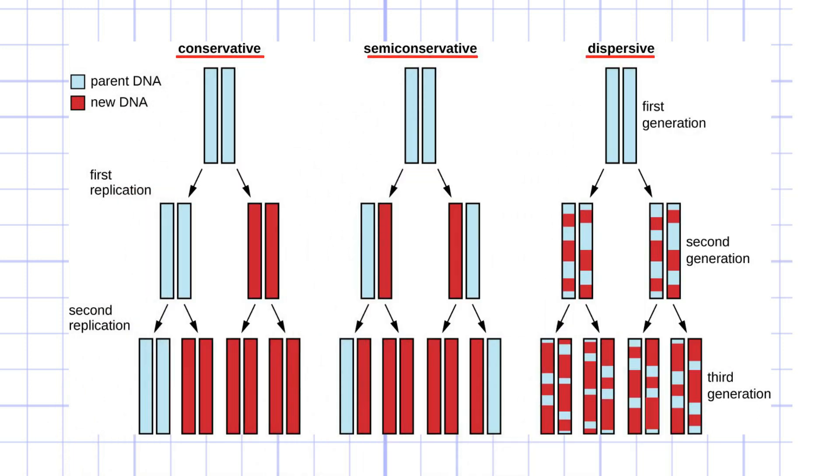Conservative replication says double strand of DNA template is preserved as it is, and the newly synthesized DNA is composed of two new strands.